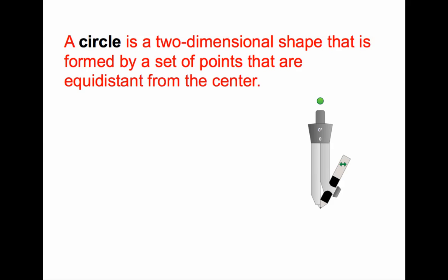Circles are really cool shapes because they're different from so many different shapes that we see every day. So let's get into what a circle really is, and this is going to lay the foundation when we're getting into the different types of relationships between certain parts of circles. A circle is a two-dimensional shape that is formed by a set of points that are equidistant — equidistant means the same distance from the center.